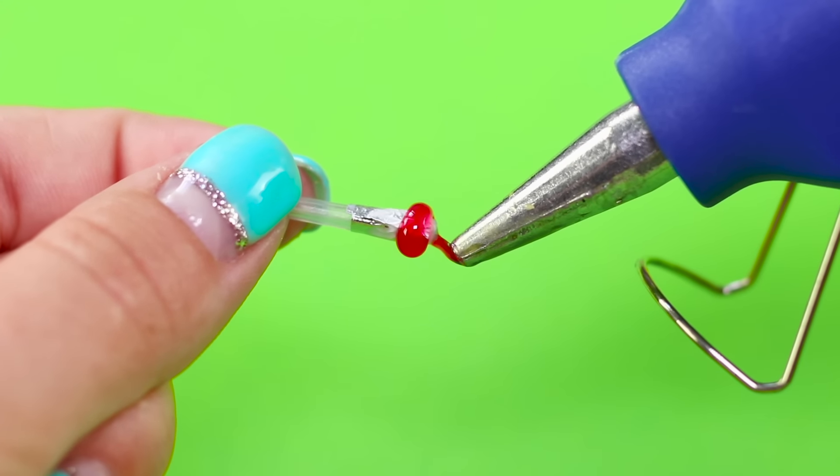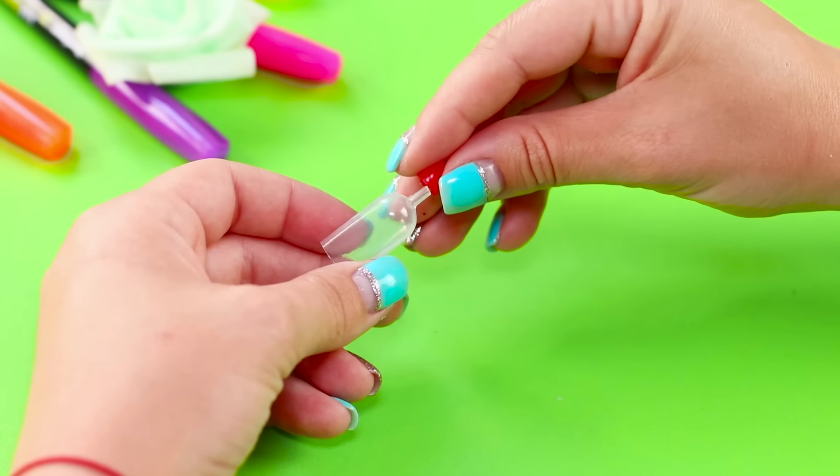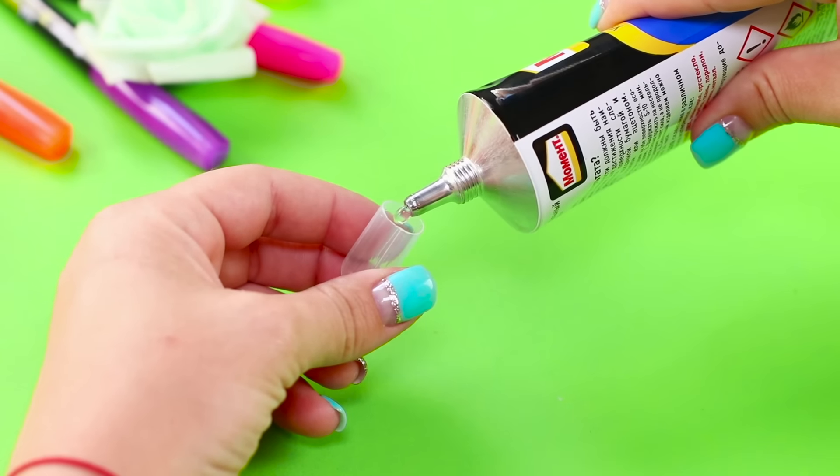When the glue dries, remove the cap and take a cut flask. Pour some glue inside it.